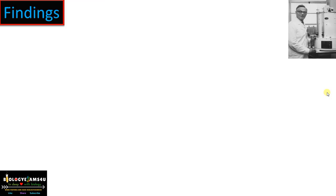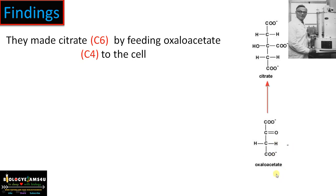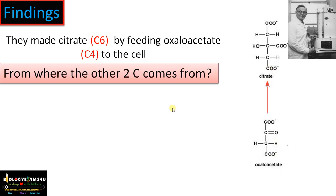Using this simple apparatus, he discovered the whole pathway. Along with William Johnson, they made citrate — a C6 compound — by feeding oxaloacetate, a C4 compound, to the cell, connecting these two molecules. The question then was: where do the other two carbons come from? Oxaloacetate is a C4 compound and citrate is a C6 compound. The hypothesis was that pyruvate, formed as the end product of glycolysis, contributes carbon to oxaloacetate for the formation of citrate.